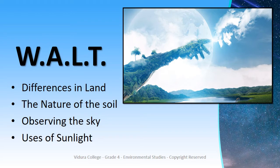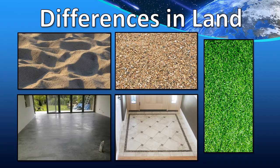Let's discuss these topics in detail. Differences in land: is our Earth flat and the same everywhere? No, it is a globe and it consists of different landforms such as rivers, mountains, waterfalls, deserts, etc. To see these differences we can conduct a small experiment.